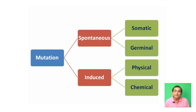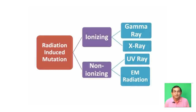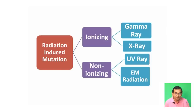Mutation could be induced by radiations. With radiation, mutation can be induced by ionization. These ionizing radiations — such as gamma rays — produce mutation by forming ions, a process called ionization.